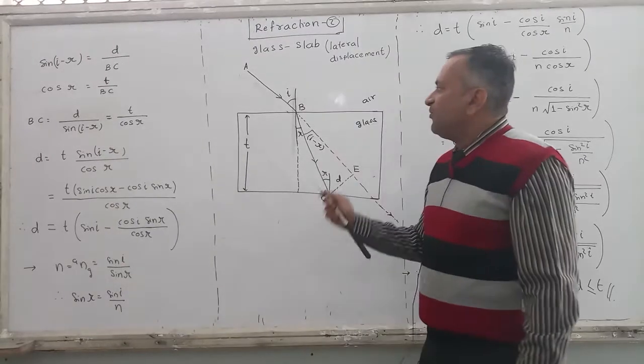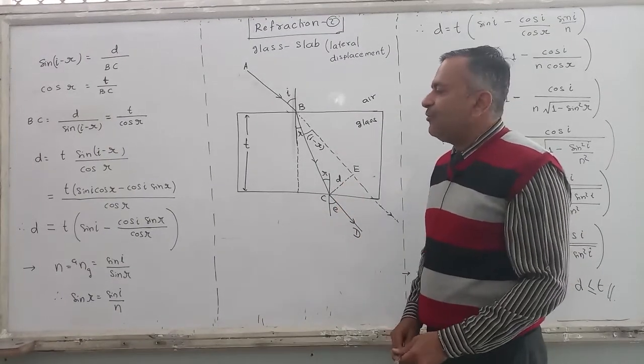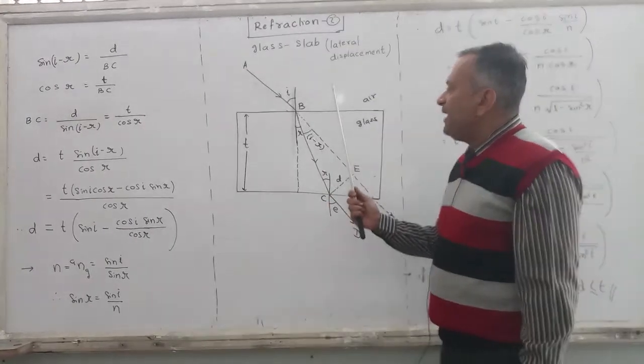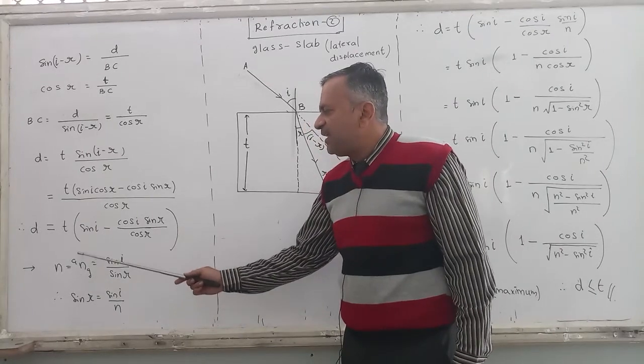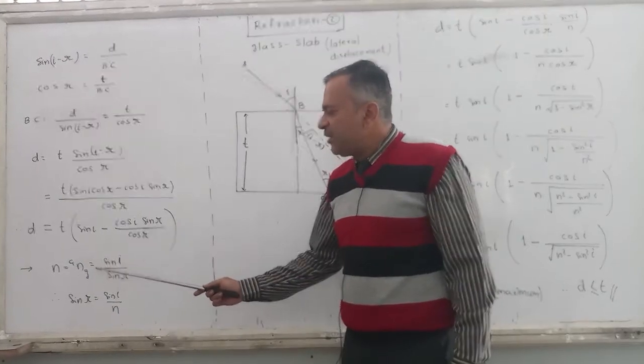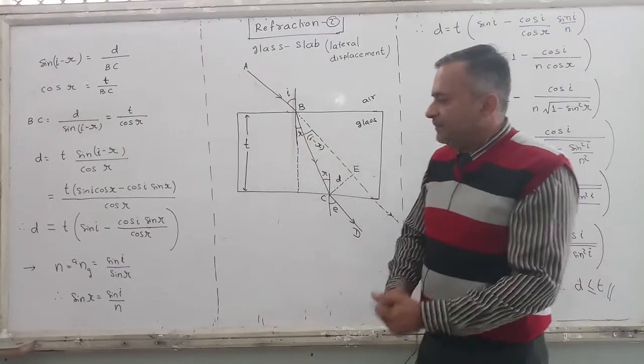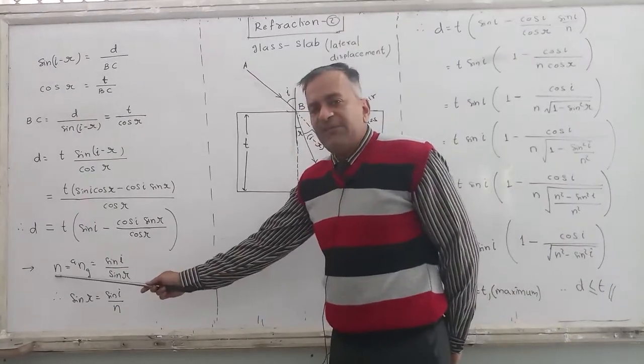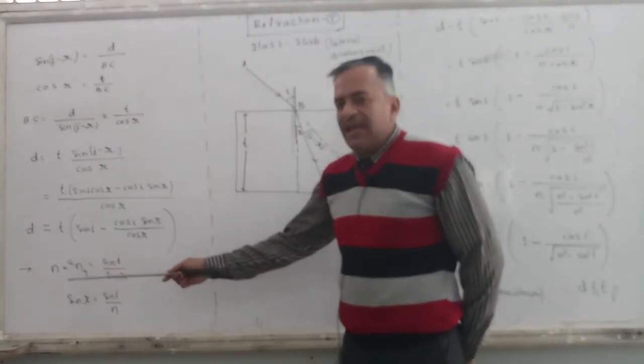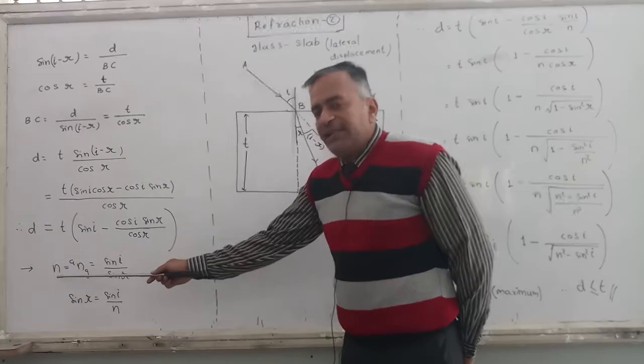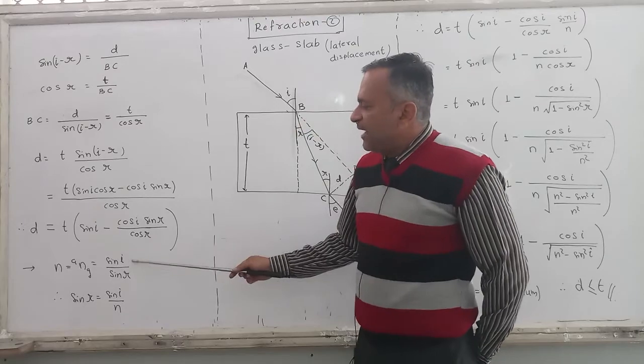Now apply Snell's law for point B. The ray is coming from air to glass, so the refractive index will be refractive index of glass with respect to air, which is equal to sin of angle I upon sin of angle R. So this refractive index I will be writing it as N only. No need to rewrite this again as N-G-A all the time. So you can simply write it once, that N means N-G-A. And that equals sin I by sin R.